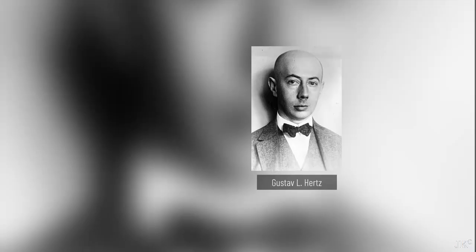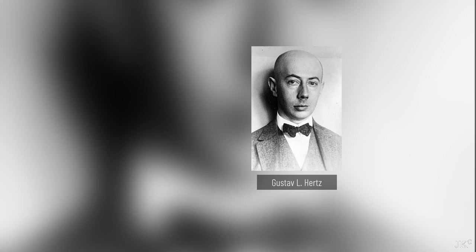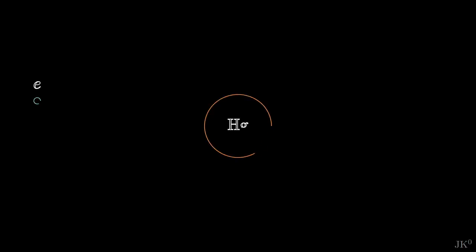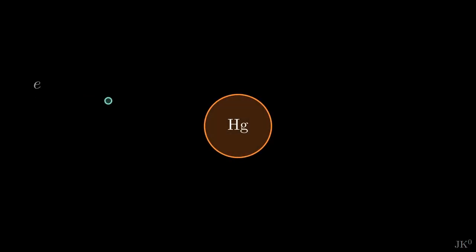In 1914, Hertz's nephew Gustav Hertz, together with James Franck, both physicists working in Berlin, set up an experiment to investigate the internal structure of atoms by smashing electrons onto them. The idea was that by measuring the electrons after they collided with the atoms in the gas, they could infer properties of the target atoms.